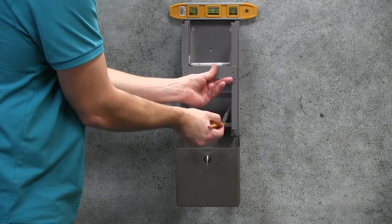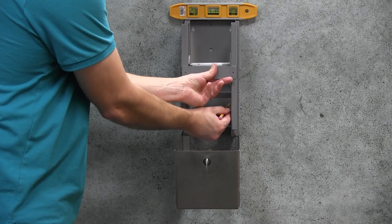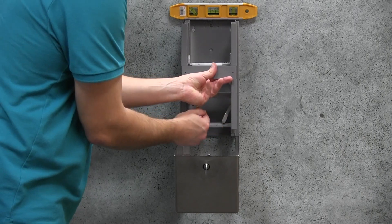If mounting underneath a grab bar, the top of the dispenser should be at least three and a quarter inch below the bar.